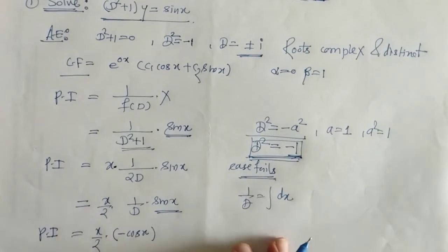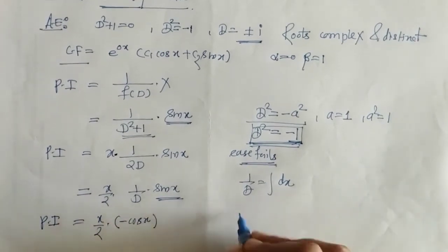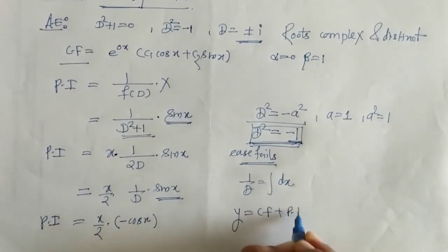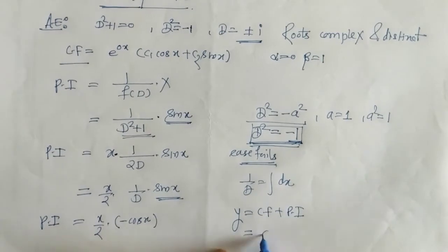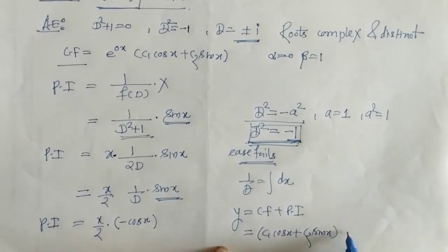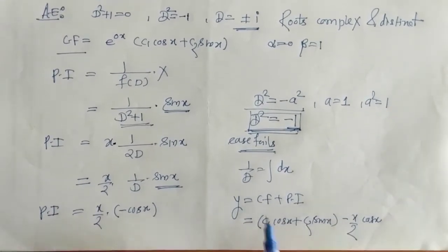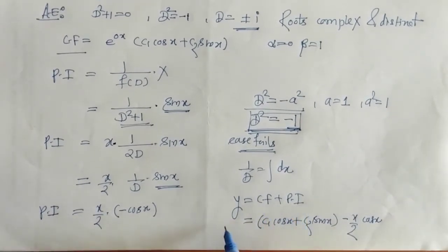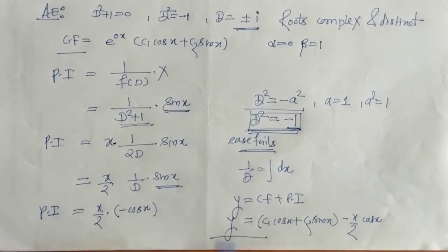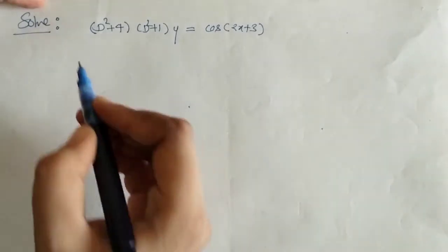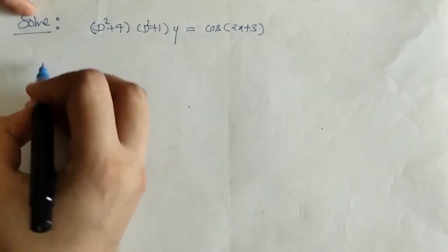We can write the complete solution as CF plus PI. In this way we have found the solution for this given differential equation.